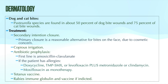Tetanus immunization should be determined and updated if needed. Animal bites are considered very tetanus-prone wounds. Generally tetanus is indicated every five years with an injury, so if it hasn't been within five years then the patient should get the tetanus vaccine as well.